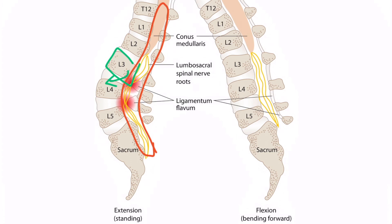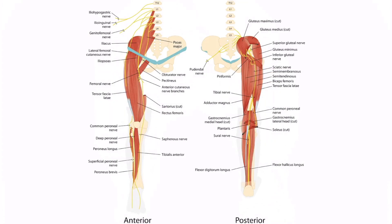Now that we've discussed the causes of radiculopathy, let's focus on other important findings. We introduced this image in the lumbosacral plexus video, but it's also helpful in understanding radiculopathy. You can see the sciatic nerve as it courses down the posterior aspect of the leg — this nerve is most frequently associated with lumbar radiculopathy. The sciatic nerve originates from the L4 to S3 region, so if the nerve roots are compressed at these levels, it can result in symptoms of radiculopathy along the distribution of the sciatic nerve, also referred to as sciatica.